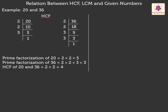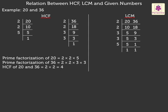Next, let us find the LCM of the given numbers by common division method. Thus, we get the LCM of 20 and 36 as 2 × 2 × 3 × 3 × 5 which is equal to 180.